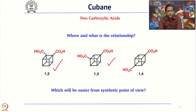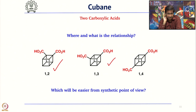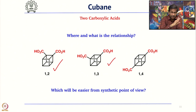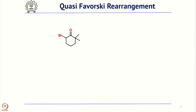All are theoretically possible, but from the experimental and synthetic point of view, which one will be easier? Which one, if you take and move forward, will give you simpler starting material? That is the major point about retrosynthesis — between these three, which one will be the best precursor?